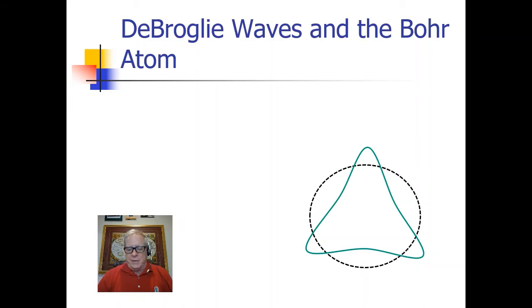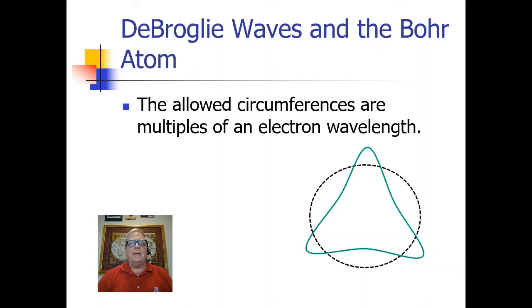So the condition that the complete wave must fit in the circular orbit gives us a way to determine what possible radii are allowed. The radii that are allowed are those that have their circumferences of the circles corresponding to a multiple of the electron wavelength as determined by the de Broglie formula.